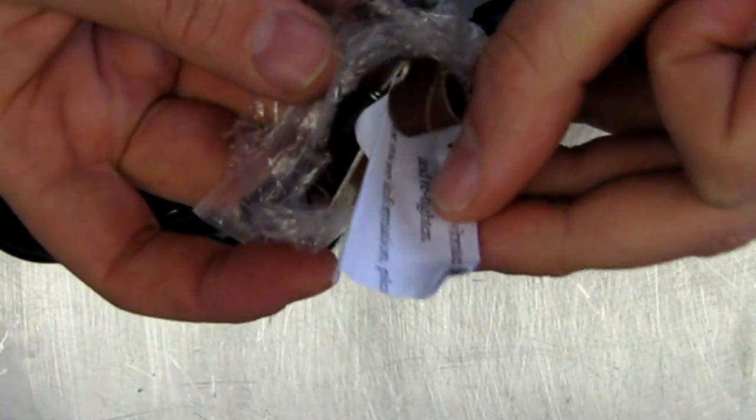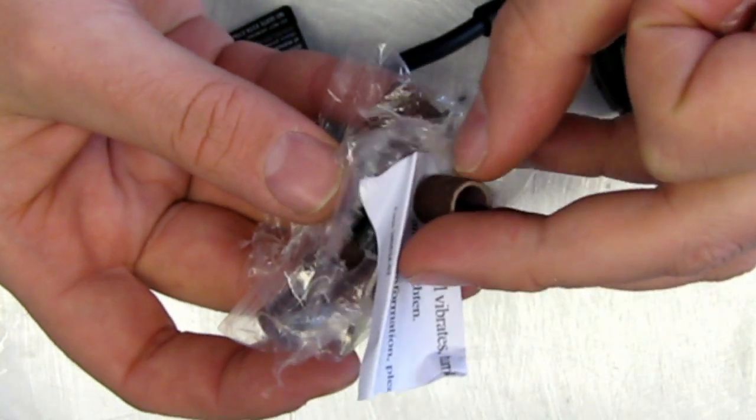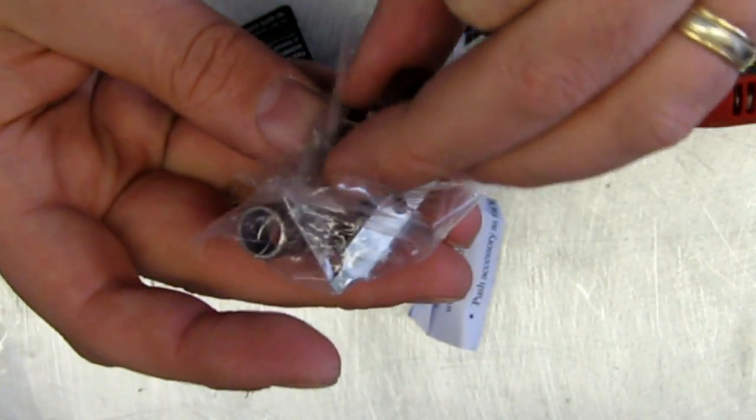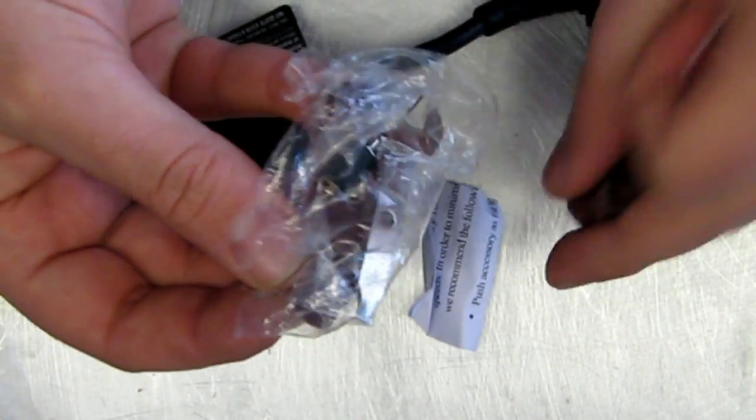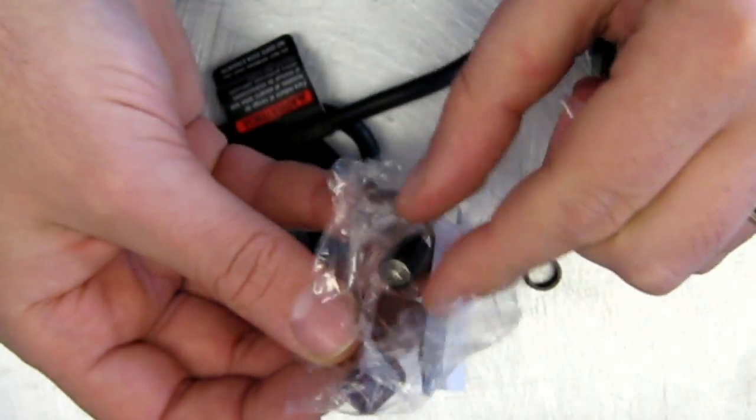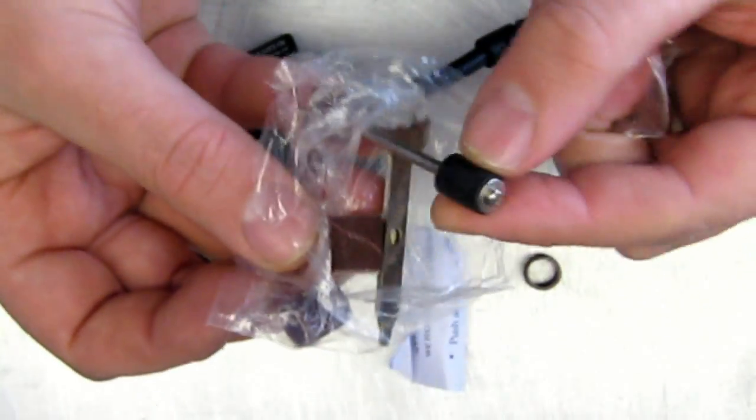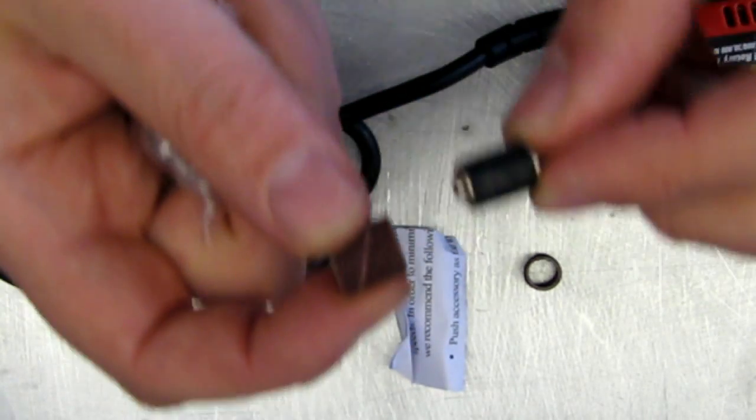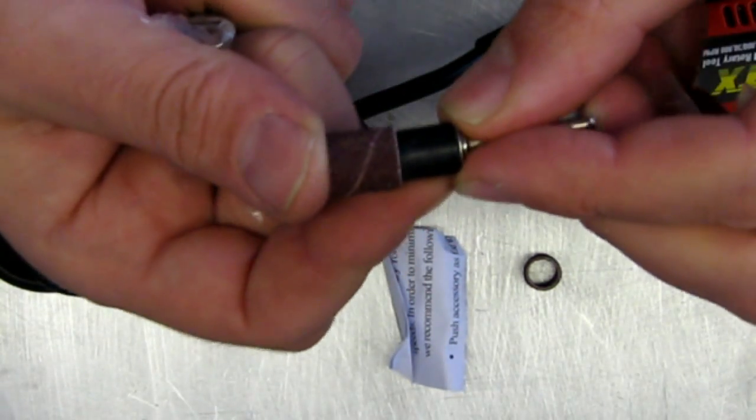All right, we got some barrel sander attachments here with varying degrees of grit. Looks like a couple coarse and a couple of medium grit.